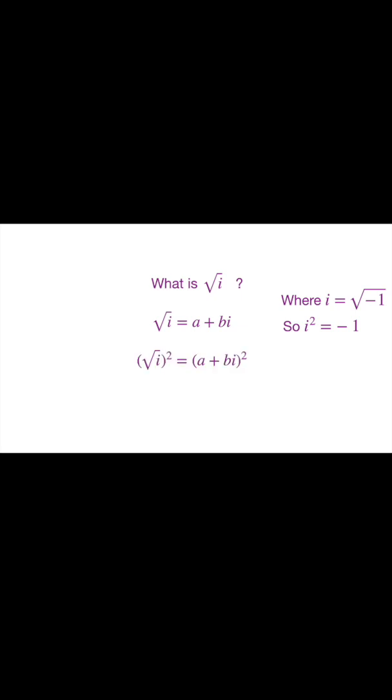Now let's square both sides of the equation. On the left, we get the square root of i squared, and on the right, we get a plus bi squared. Multiplying that out, this is what we get.